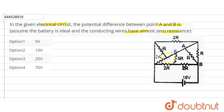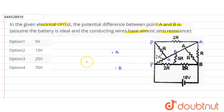This point will be A, this point will also be A. Let's assume this is point P, so this point will be P. And this is point B. Now when we draw the equivalent circuit, this is A, this is B, and this is P. Let's assume this point is Q.